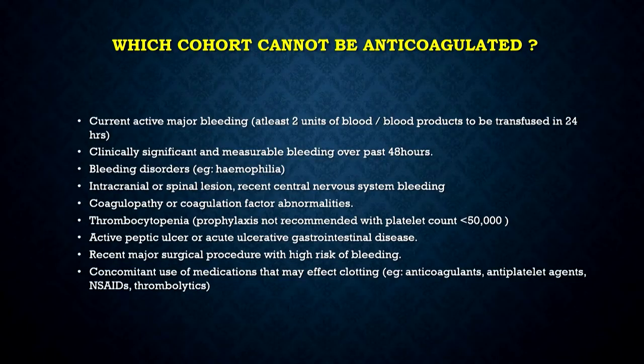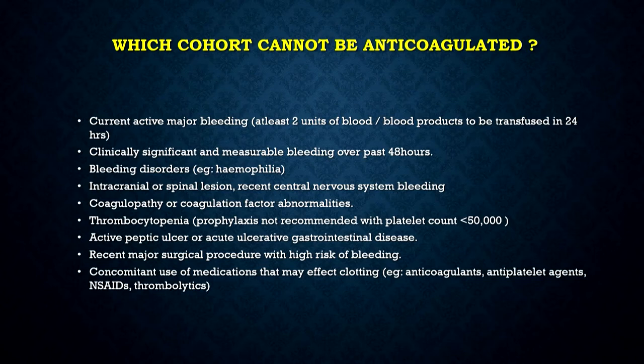Which cohort cannot be anticoagulated? There are certain cohorts to be careful about, mentioned in all standard textbooks. If they have had a recent bleed or a transfusion of more than two bags of blood in the last 24 hours, indicating a major bleed, they may bleed more with anticoagulation. Someone with a platelet count downward trending below 50,000 may not be appropriate. Those with ulcerative colitis, peptic ulcers recently active with a bleed, or other medicines that add to bleeding risk also require caution. Identifying who should not be anticoagulated shows you are thinking for the patient and avoiding events that may compromise their health further.